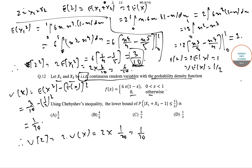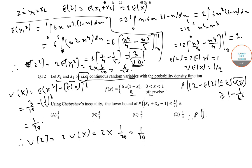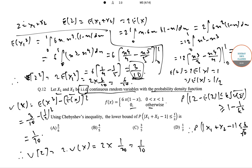Chebyshev's inequality states that P(|Z − E[Z]| ≤ k * sqrt(Var[Z])) ≥ 1 − 1/k^2. This gives P(|X1 + X2 − 1| ≤ k/sqrt(10)) ≥ 1 − 1/k^2.